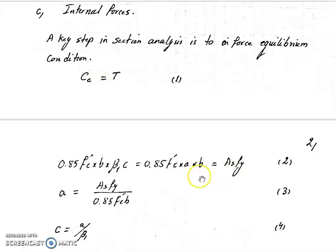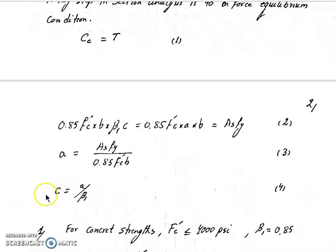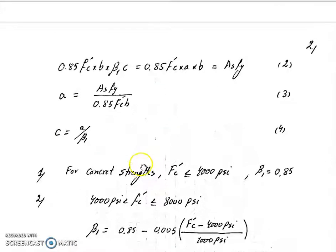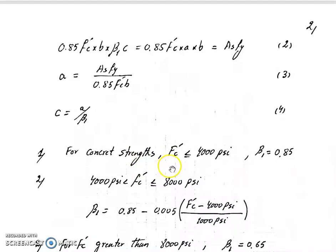a is As fy over 0.85 fc prime multiplied by b. After that, you find c. c is equal to a over beta 1. We have c over here also. a is equal to beta 1 c. For beta 1, if fc prime is equal to or smaller than 4000 psi, beta 1 is 0.85.